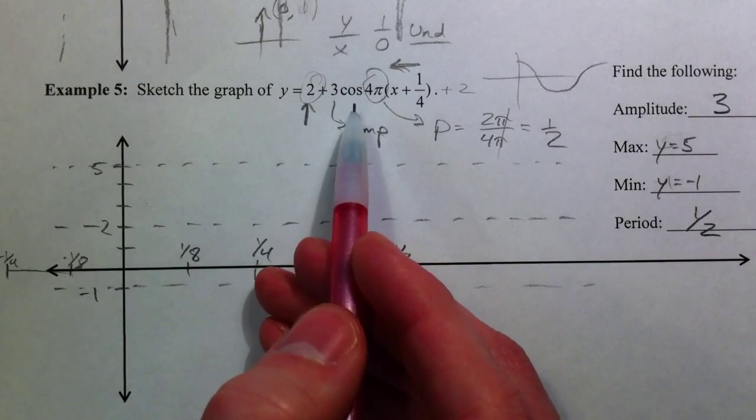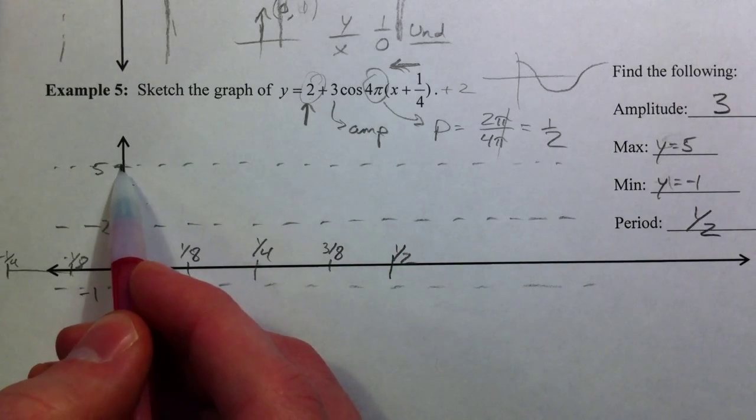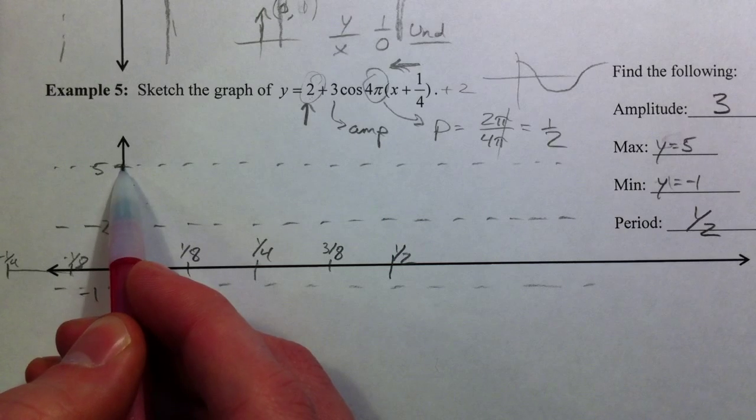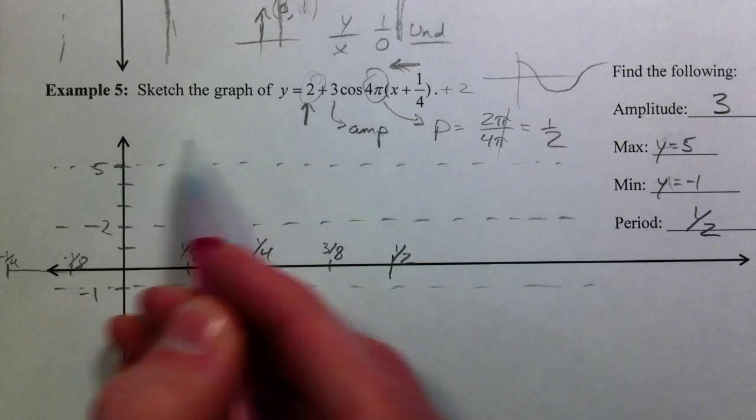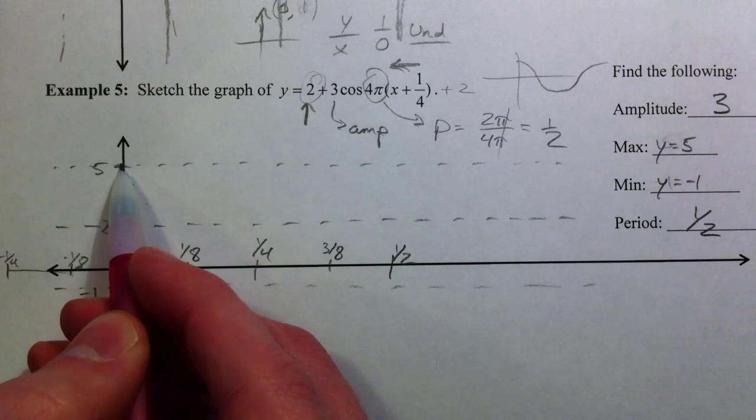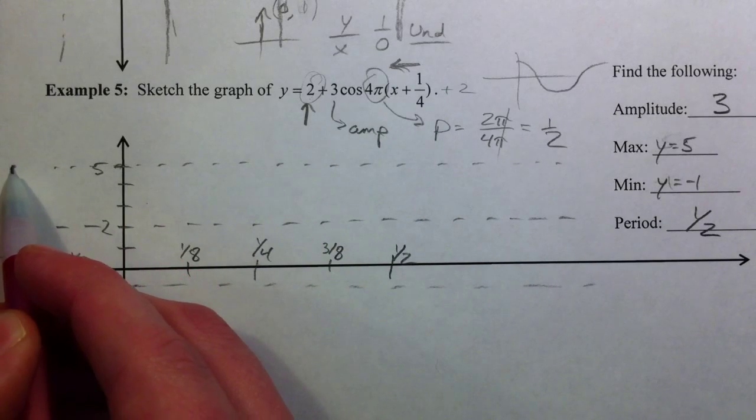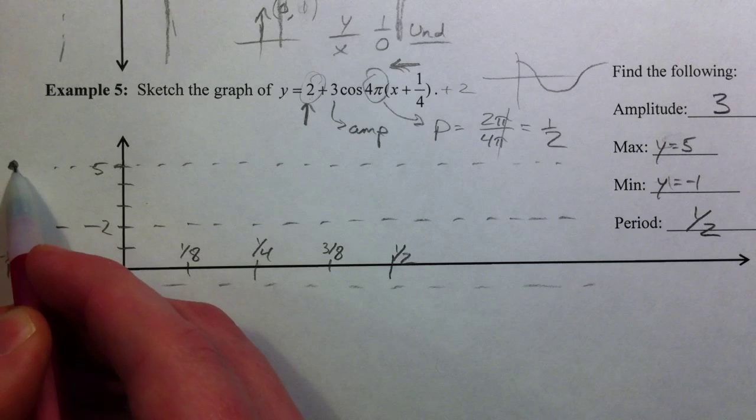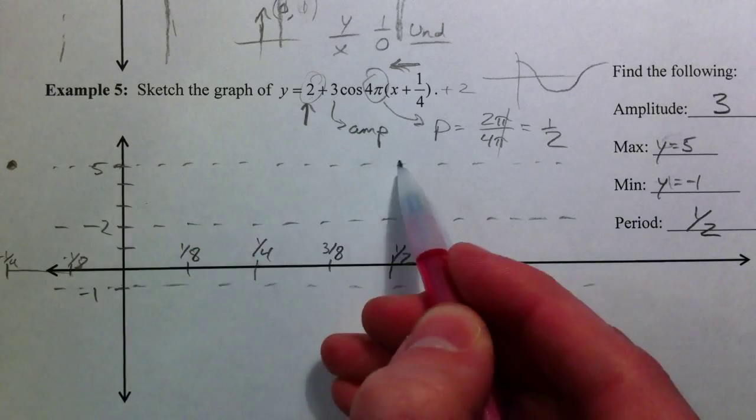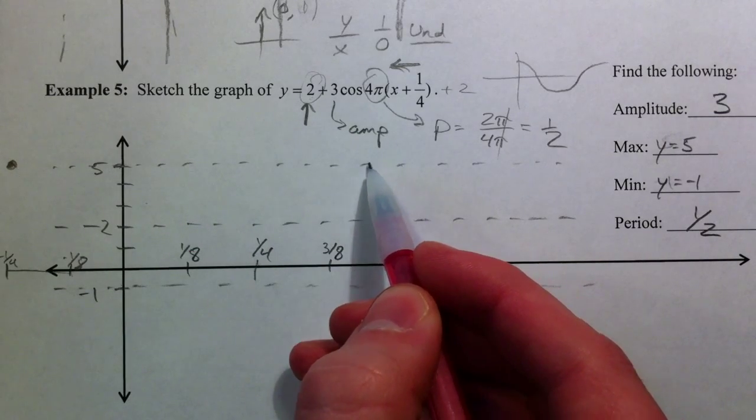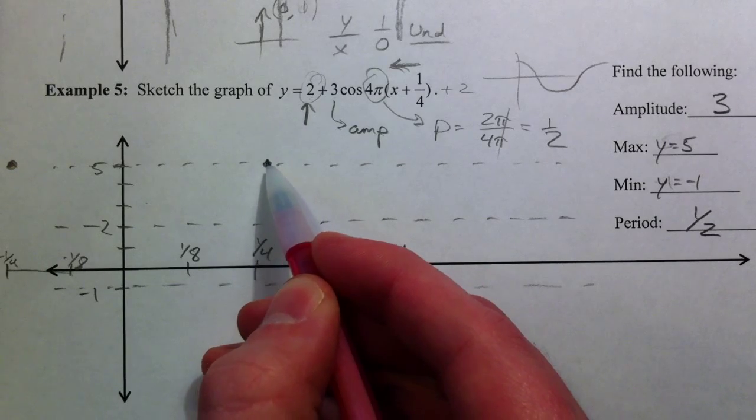So, cosine graph. 1 half usually starts at the peak. And so, usually we'd start at 1, but it's shifted up and stretched. But then, also, our left 1 fourth. So, we're going to start at 1 fourth. Usually, it would repeat by the 1 half, but that, too, has moved to the left 1 fourth.